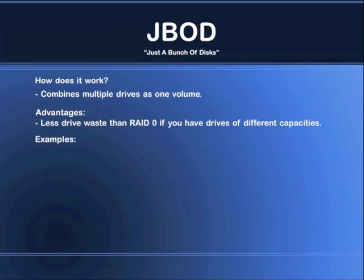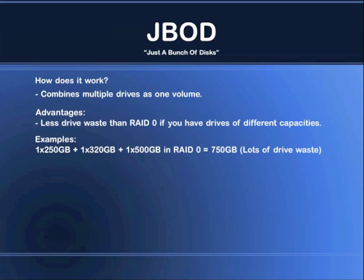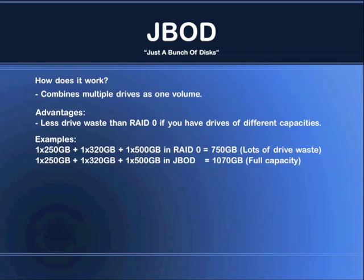Here's an example: if you have a 250GB, one 320GB, and one 500GB drive, and you wish to set them up as a striped array in RAID Zero, the total capacity of that RAID array would be 750GB — because it is the smallest drive that makes the limitation of the RAID array, so you have lots of drive waste. If you put the same drives in JBOD, you will have the full capacity of 1070GB.